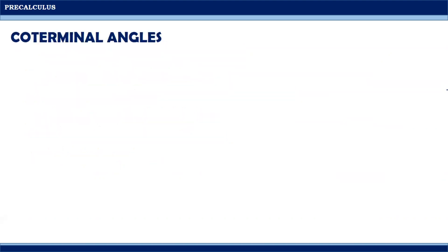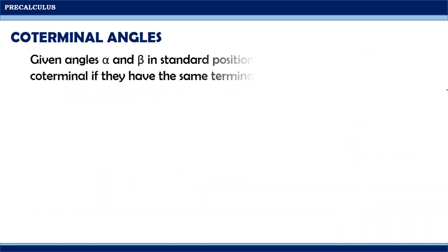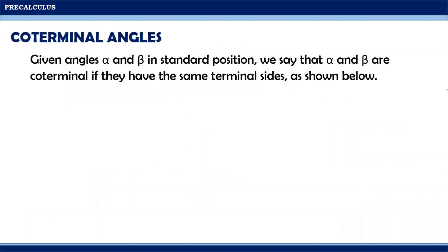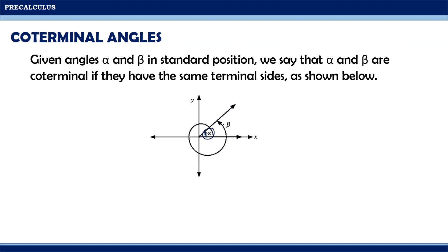This time, let us discuss about coterminal angles. Given angles alpha and beta in standard position, we say that alpha and beta are coterminal if they have the same terminal sides. Looking at this figure, notice that the given alpha and the given beta lie on the same terminal side. Therefore, we can say that alpha and beta are coterminal angles.